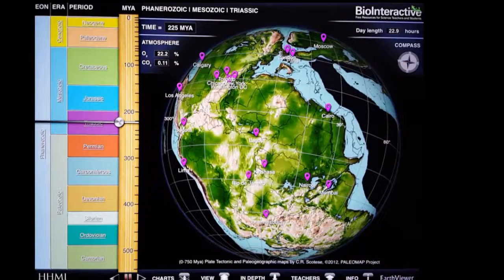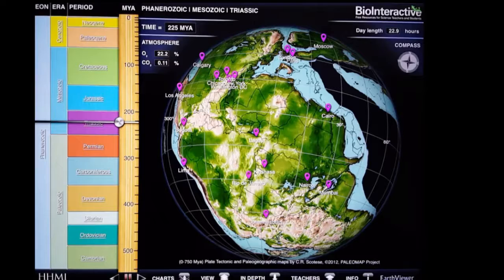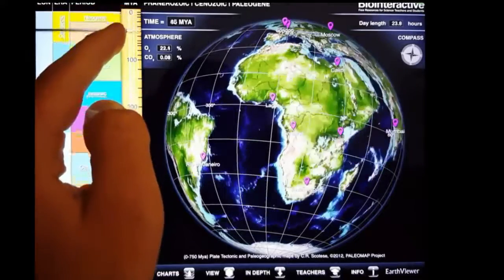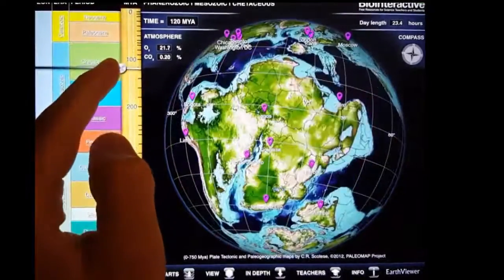Presently, I'm viewing the Earth as it looked 200 million years ago in the Triassic Period. You can see that the land masses on the Earth change based on how many millions of years ago the scale is set to.